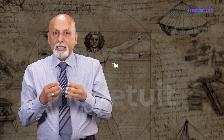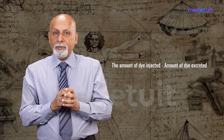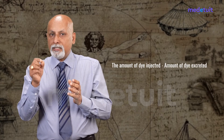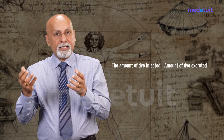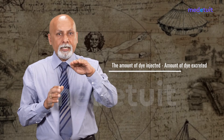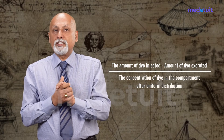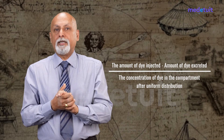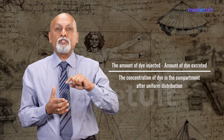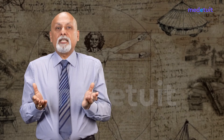The amount of dye excreted is equivalent to the number of coins the person brought back after distribution. We subtract that — just as before. So the formula is: the amount of dye injected minus the amount of dye excreted, divided by the concentration of the dye in that compartment after uniform distribution. This is the indicator dilution formula, also called the dye dilution technique.